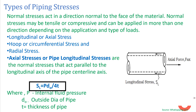The different types of stresses in a piping system begin with normal stresses, which act in a direction normal to the face of the material. Normal stresses may be tensile, compressive, or act in more than one direction depending on the application and type of loads. Normal stresses are divided into three parts: longitudinal or axial stress, hoop or circumferential stress, and radial stress.